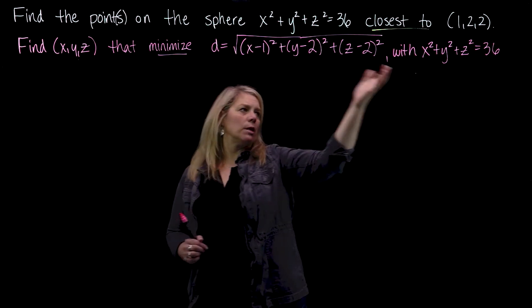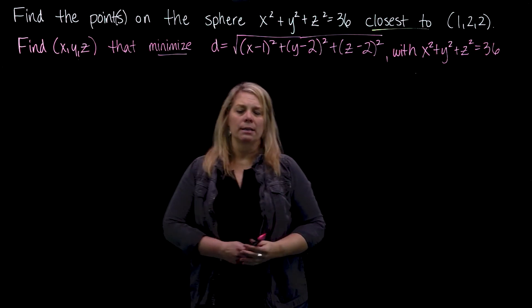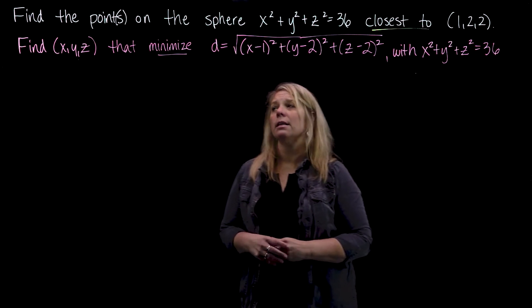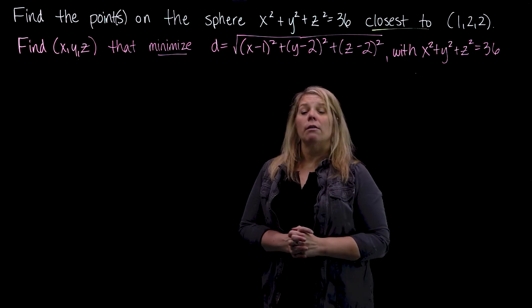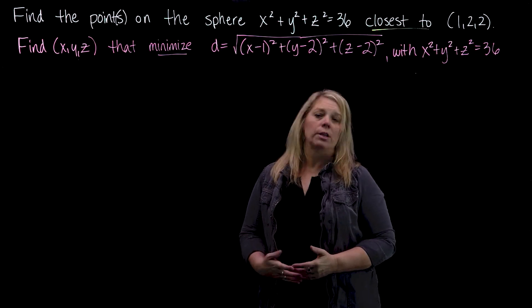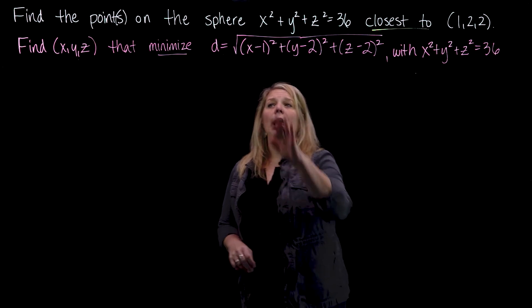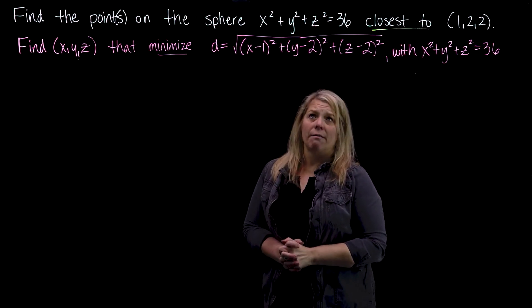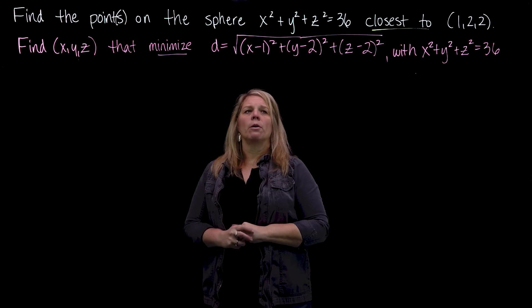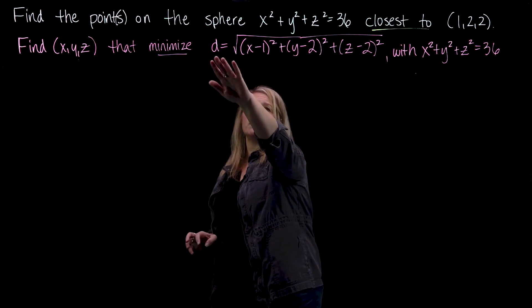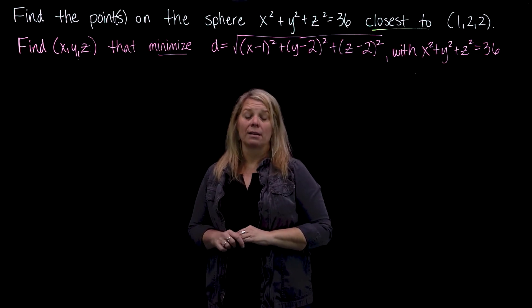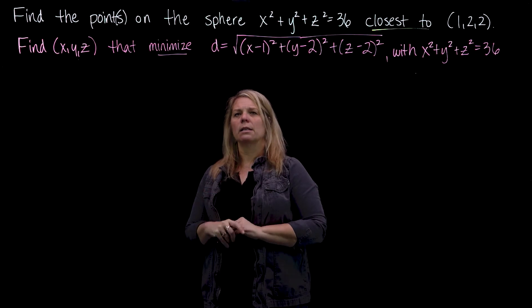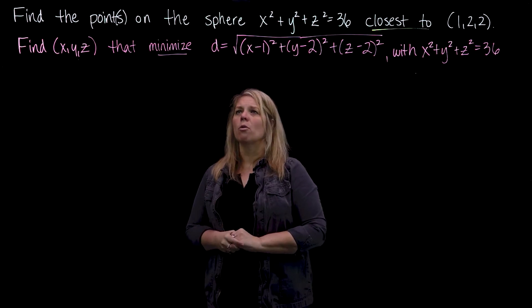So this is constrained optimization. Here's our constraint, and here's what we want to optimize — in this case, minimize a function. This is ideal for Lagrange multipliers as a method. When we do Lagrange multipliers, we need to think about an objective function — that's what we want to maximize or minimize. I could use the distance formula, but I will need to take derivatives of it, and those partial derivatives get pretty ugly.